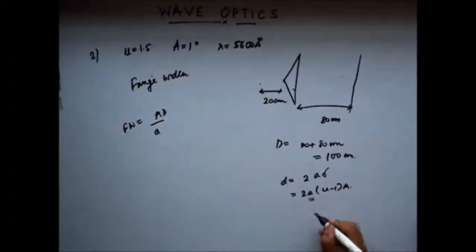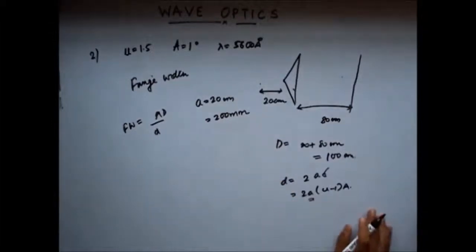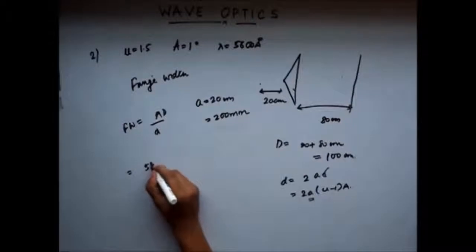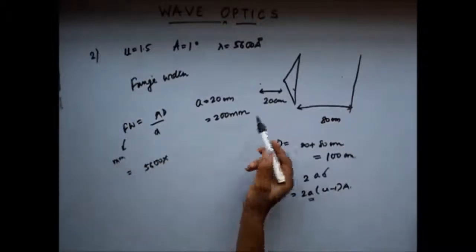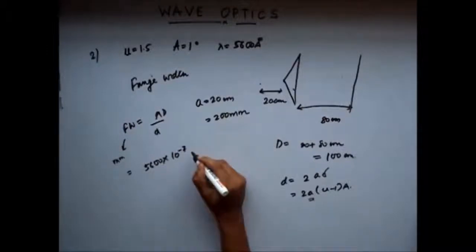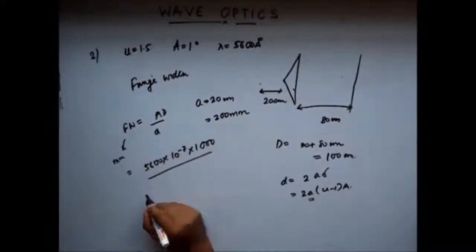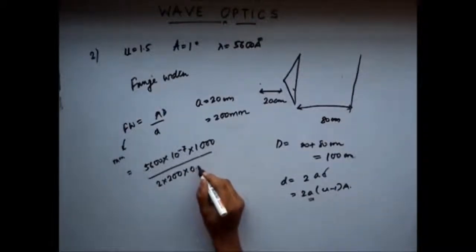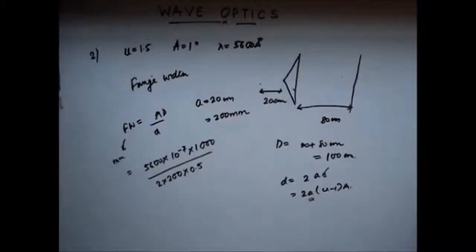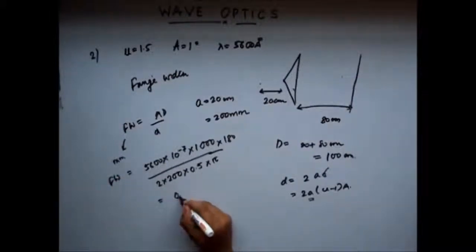So putting the values: λ = 5600 × 10⁻⁷ millimeter, D = 1000 millimeter, d = 2 × 200 × 0.5 × (π/180). Solving this gives the fringe width as 0.16 millimeter. This was a purely mathematical question requiring substitution of values into the fringe width formula.